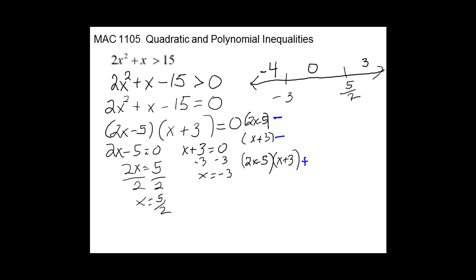Testing 0 in the middle region: 2 times 0 minus 5 gives negative; 0 plus 3 gives positive; negative times positive gives negative. Testing 3 in the right region: 2 times 3 minus 5 gives positive; 3 plus 3 gives positive; positive times positive gives positive. Look back and see what you wanted — the inequality is greater than 0, so you want the regions that are positive on the bottom line: the left section and the right section.